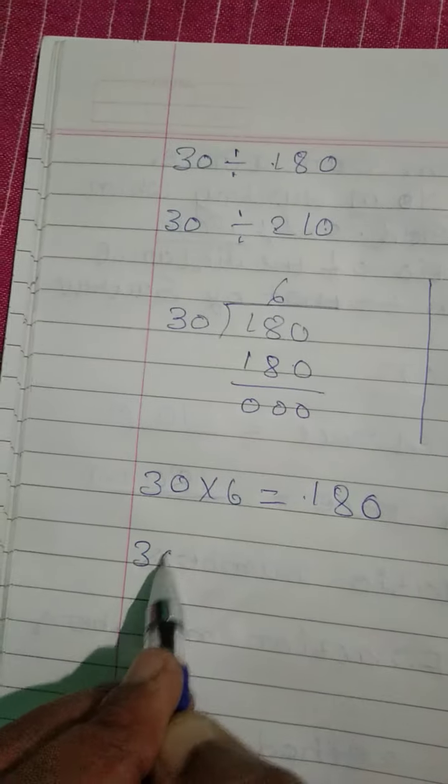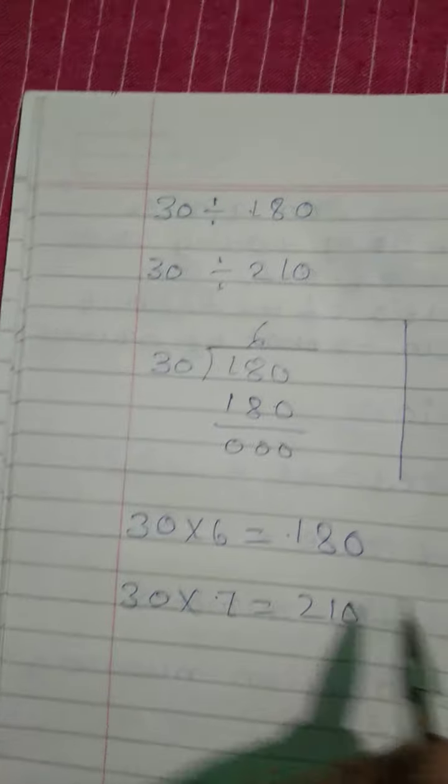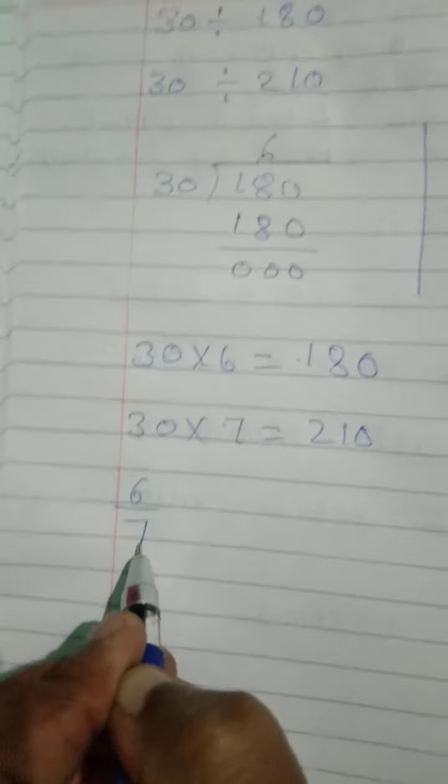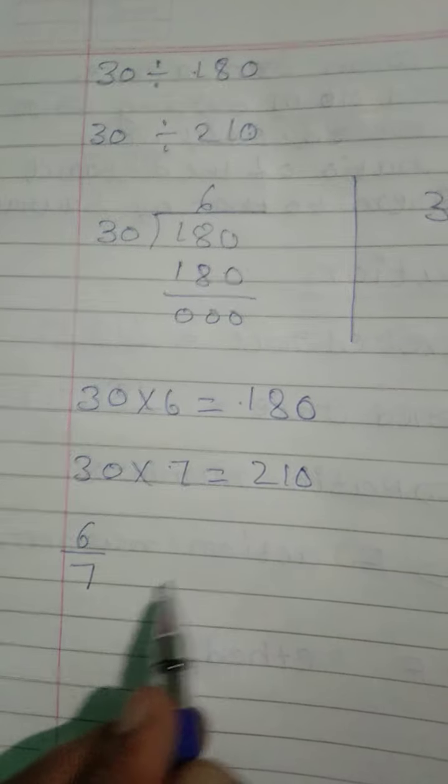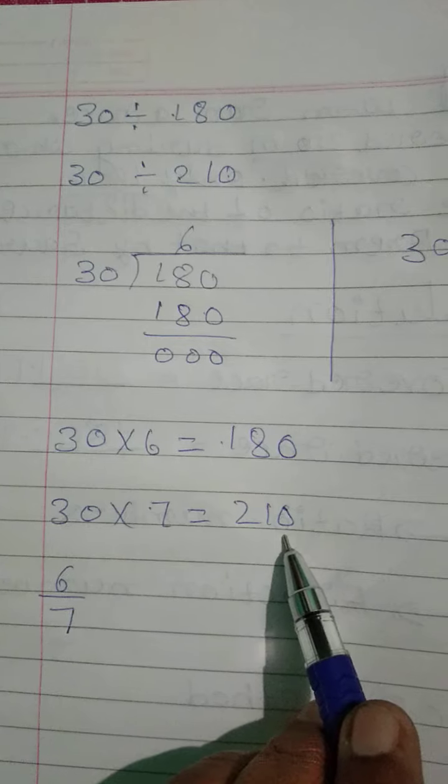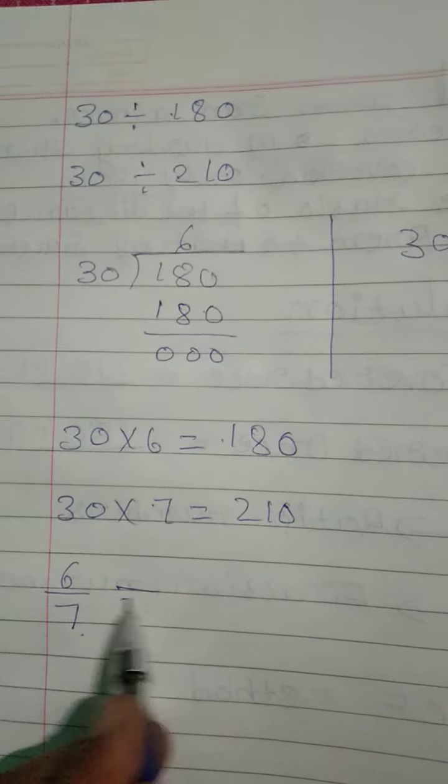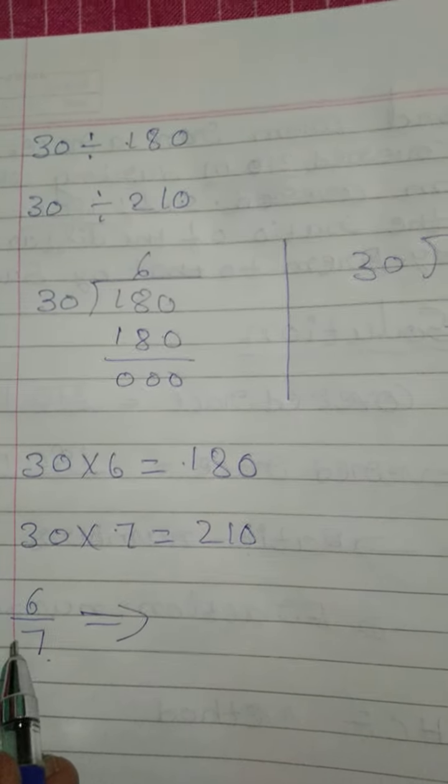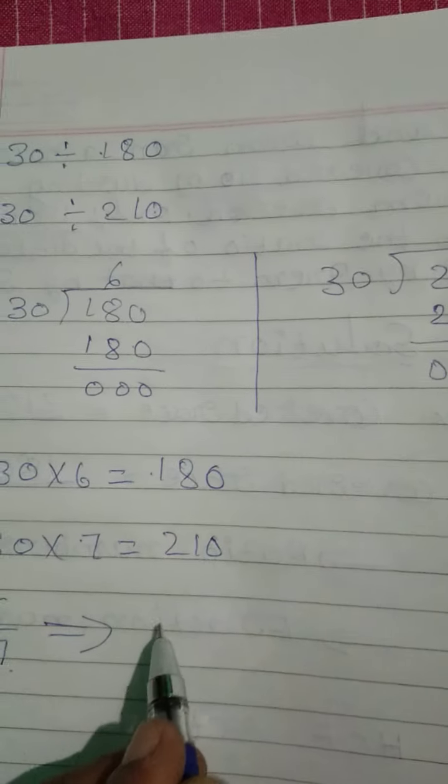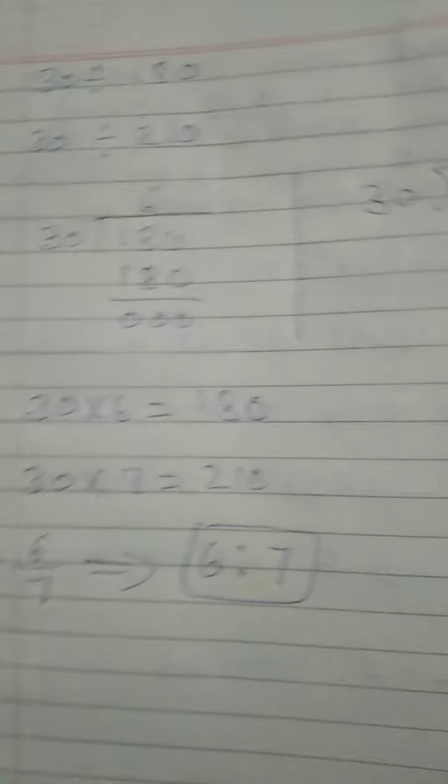Thirty into seven is 210, thirty into six is 180. Reduce the fraction to six by seven. Therefore 180 by 210 in lowest terms is six by seven. Now convert this fraction into ratio numbers: six is to seven. This is the final answer.